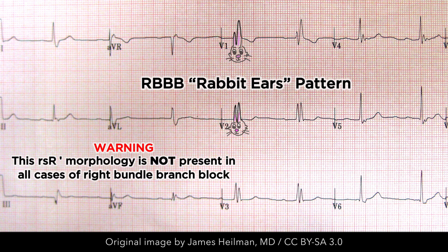Note, however, that other possible wave morphologies also exist, such as QR, R, R-prime, or just R. Thus, the more common RSR-prime morphology, or rabbit ears if you will, is not present in all cases of right bundle branch block.